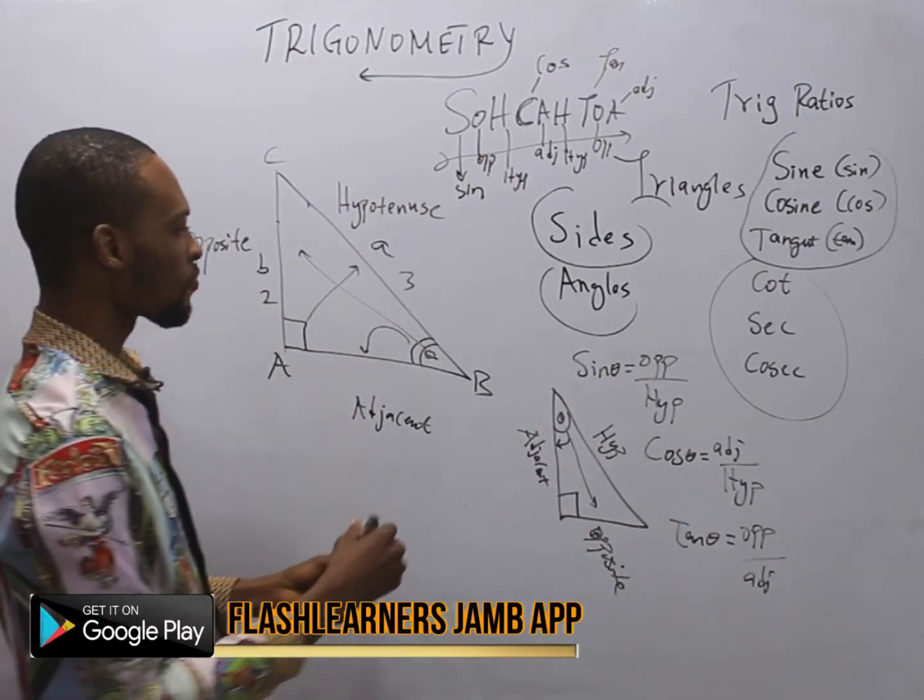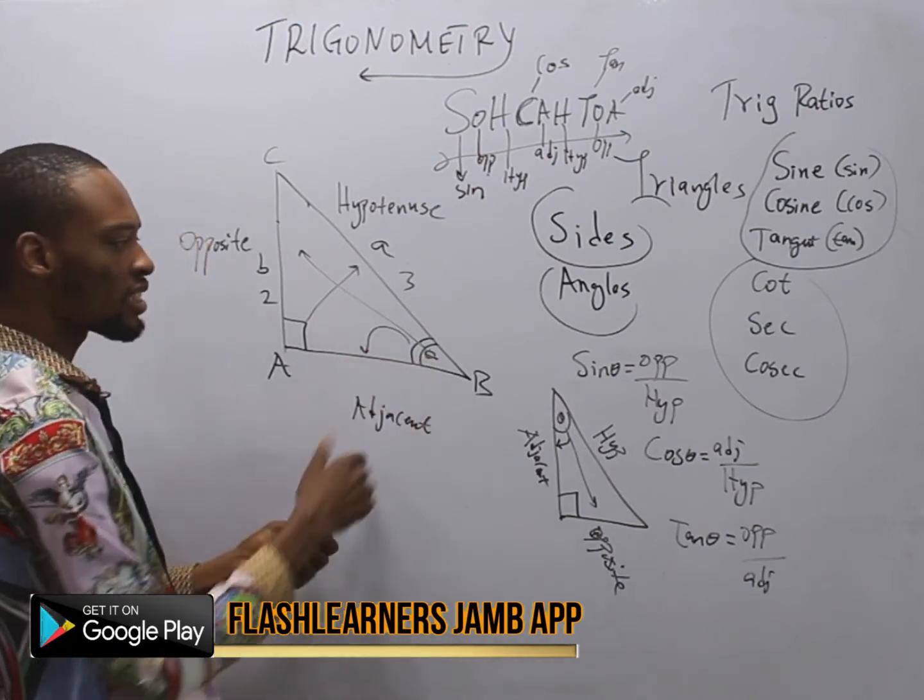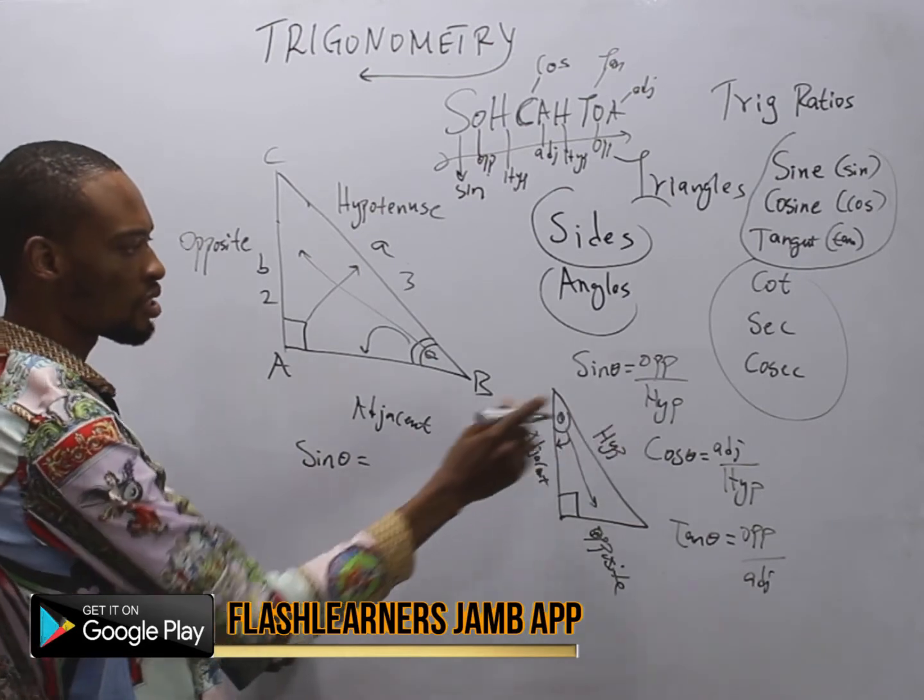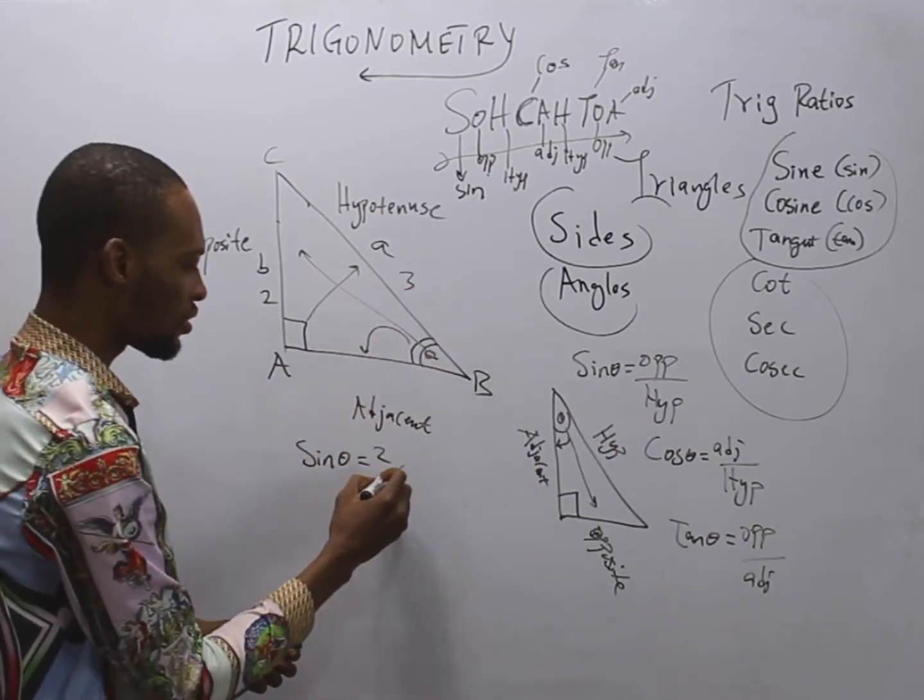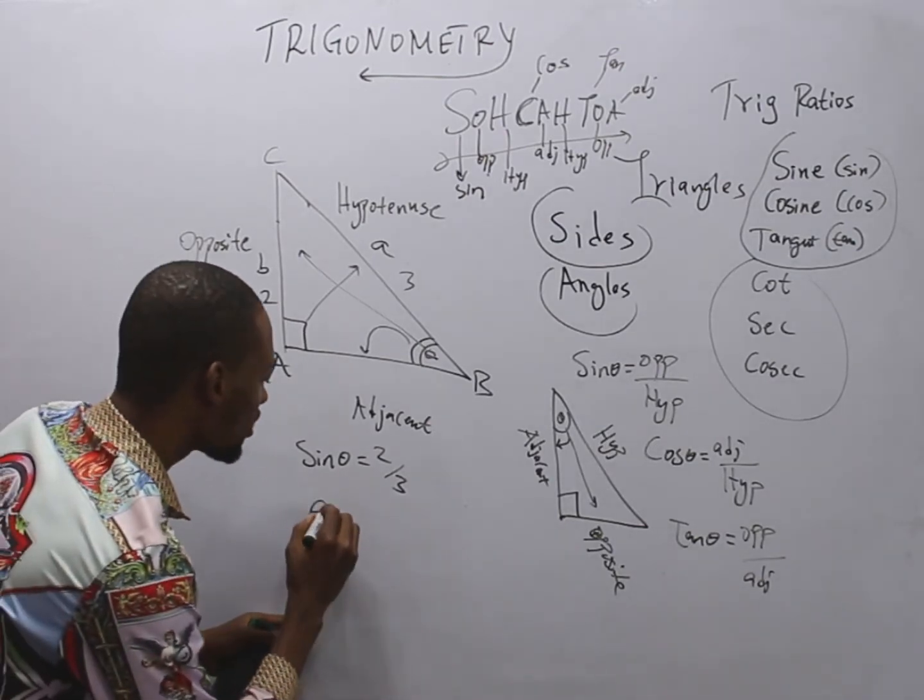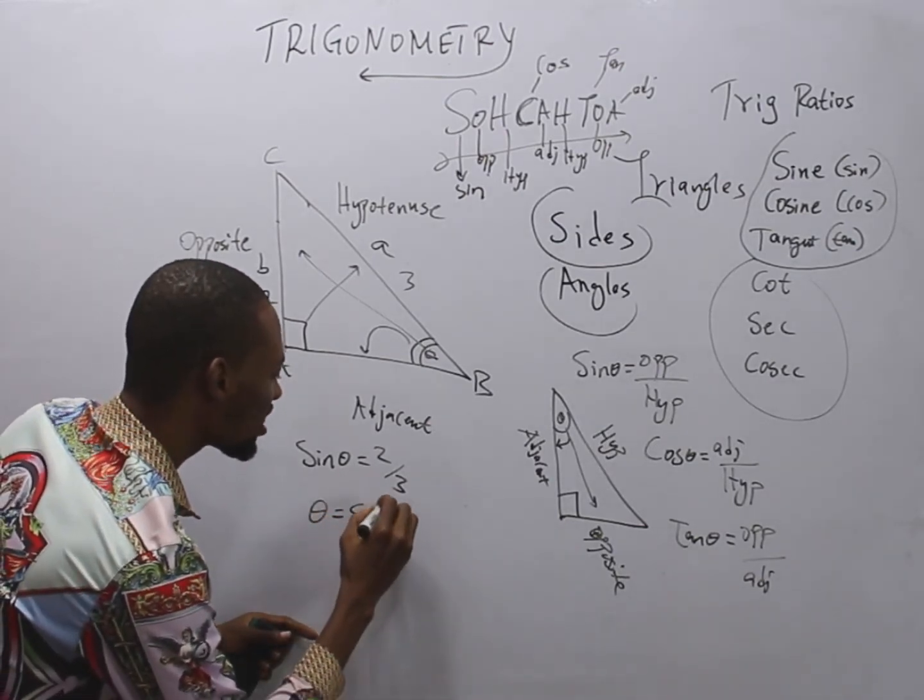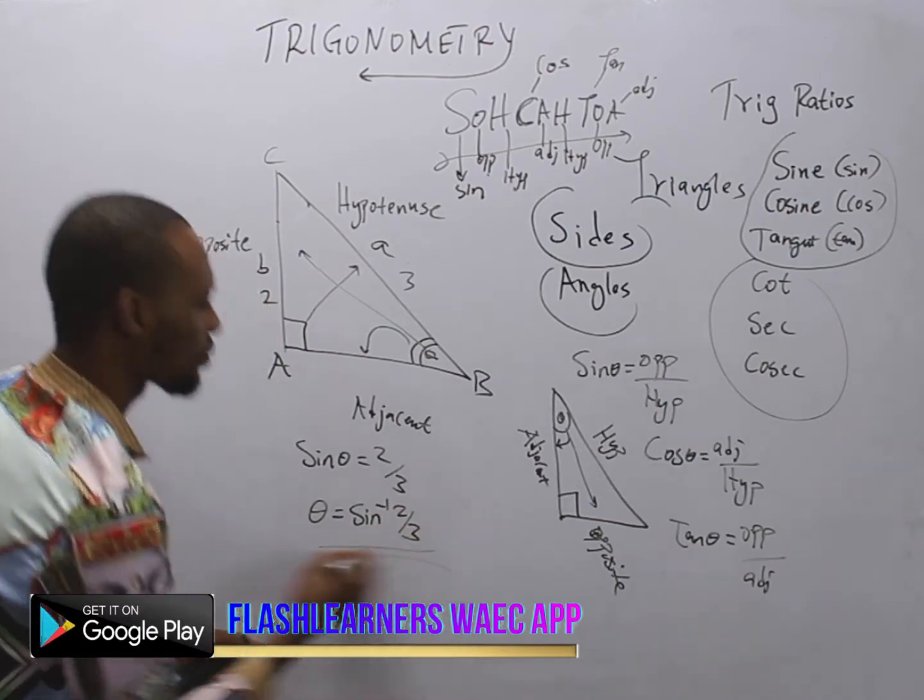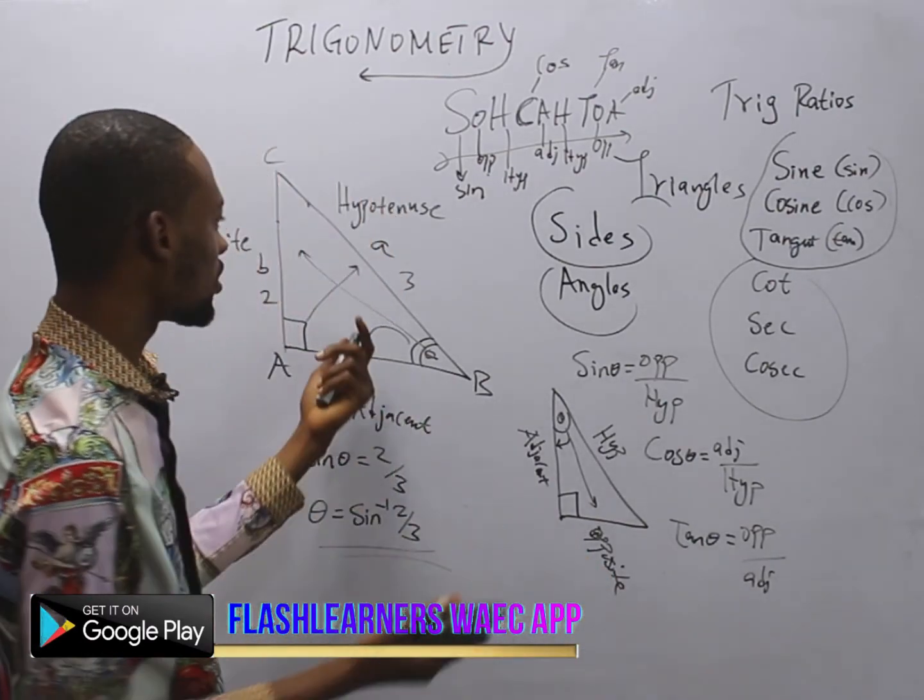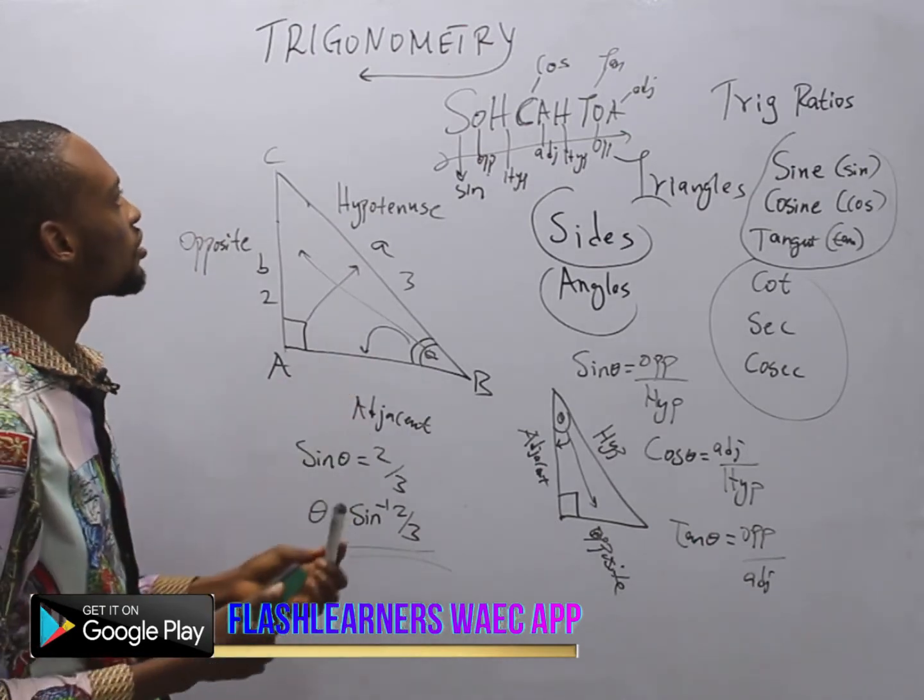This simply means that to look for this angle theta, we simply say sine theta is equals opposite, which is 2, over hypotenuse, which is 3. So theta is simply equals sine inverse of 2 over 3. So this is how you look for angles in trigonometry.